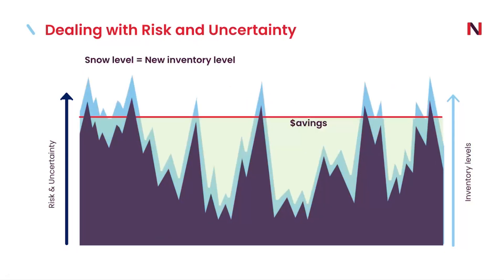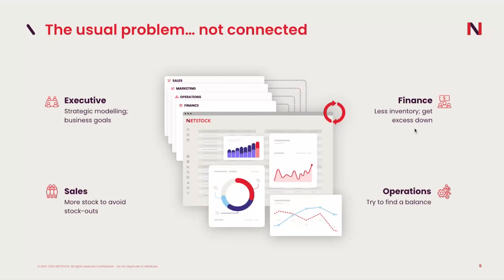NetStock gets a lot of ROI very quickly because mismanagement of inventory or misplacing policies is costly. Within the first six months, we typically have the ability to reduce inventory levels anywhere between 10% to 15%, cutting out items where you've grossly over-invested. Another common problem is that within a business, multiple stakeholders use the same inventory to achieve their individual targets.